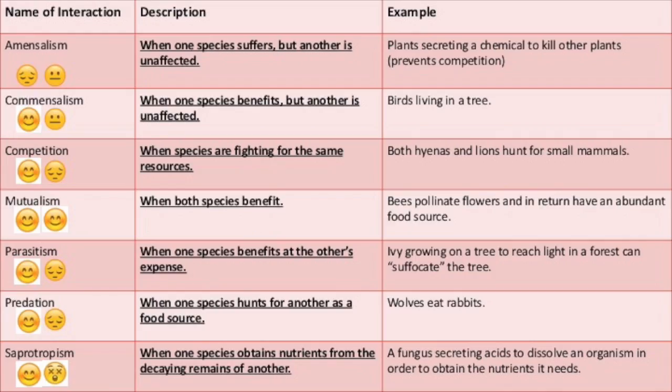While studying the biogeochemical cycles in food webs, we discuss that species interact in their environment. The major types of species interactions include amensalism, commensalism, competition (both inter- and intraspecific), mutualism, parasitism, predation, and saprotrophism.